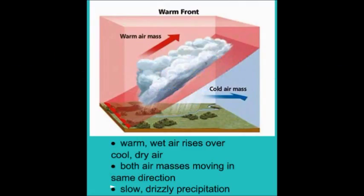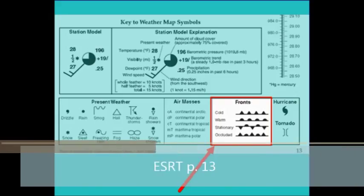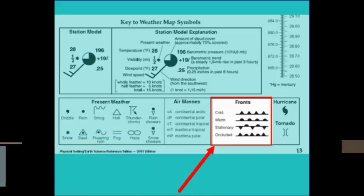A warm front is when the warm air mass and cold air mass are moving in the same direction. So, that results in a slow, drizzly precipitation that can last for several days. We have some weather map symbols on page 13 of your reference table for cold fronts, warm fronts, stationary fronts, and occluded fronts. Of those, the most important are the warm front and cold front symbols.